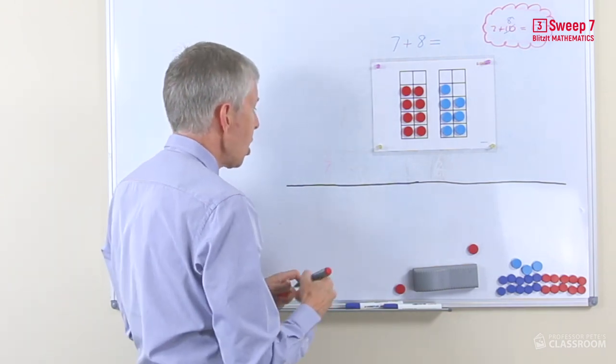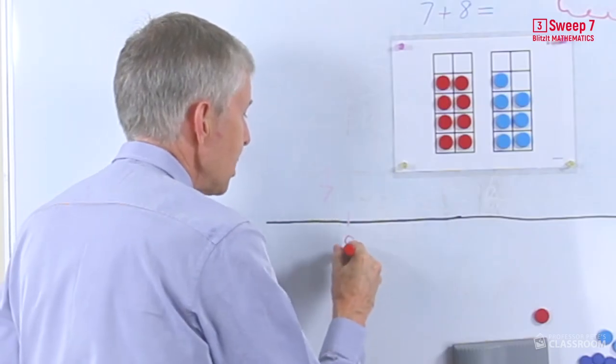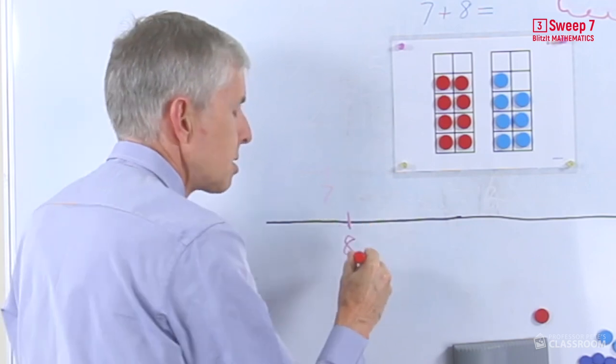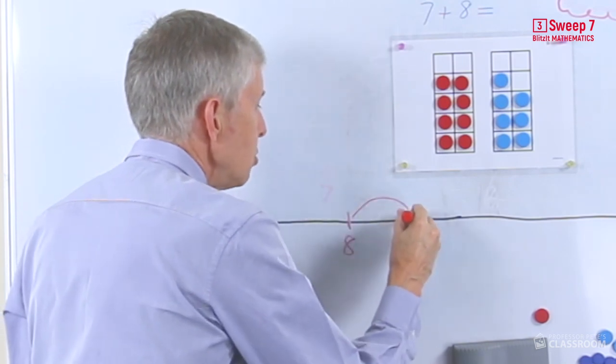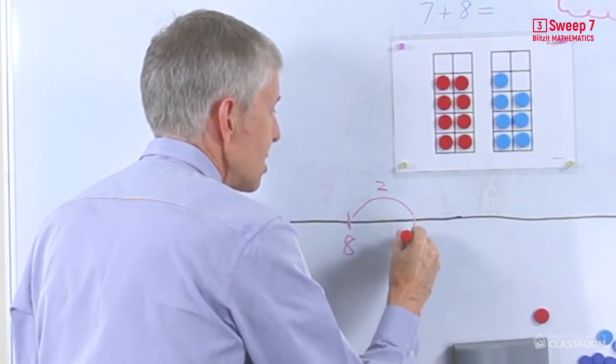Let's look at the number line, the open number line. Again we'll start with 8. Let's do 8 plus 4 for argument's sake. We're going to do a hop of 2 to start with because that takes us up to the 10.